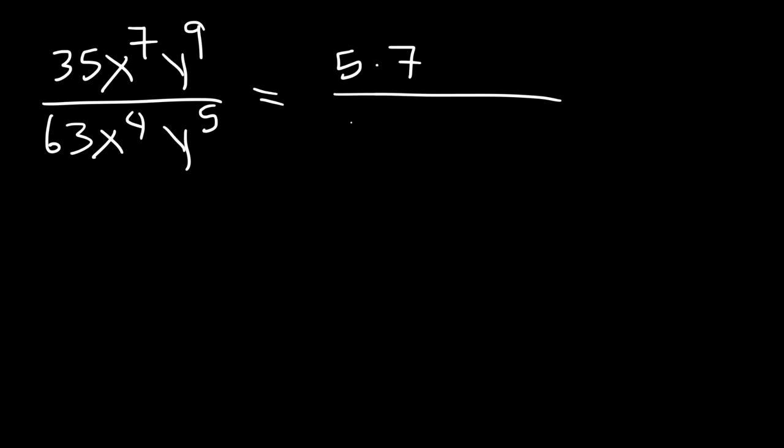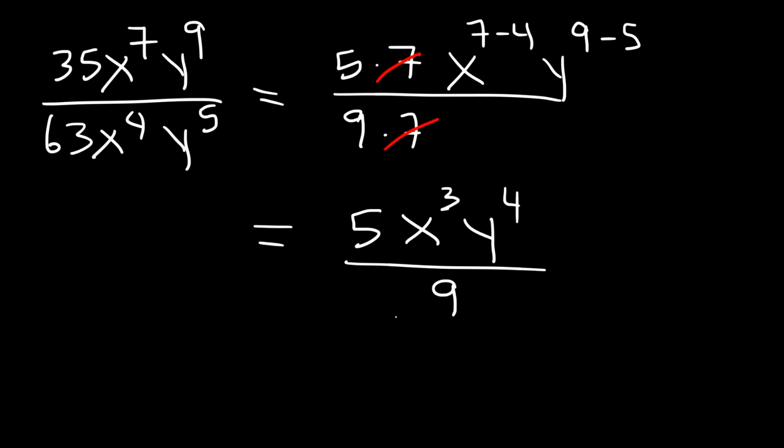All right, let's try this one. 35x to the 7th, y to the 9th, and let's divide it by 63x to the 4th, y to the 5th. 35 is 5 times 7. 63 is 9 times 7. And then we have x, 7 minus 4, and y, 9 minus 5, which initially will go on top. Now we can cancel the 7s. 7 minus 4 is 3, 9 minus 5 is 4, and we have a 9 on the bottom. So this is going to be the final answer for that problem.